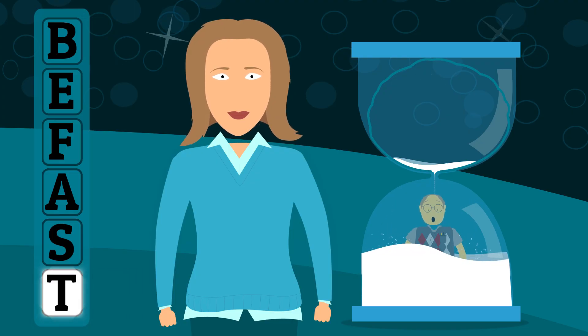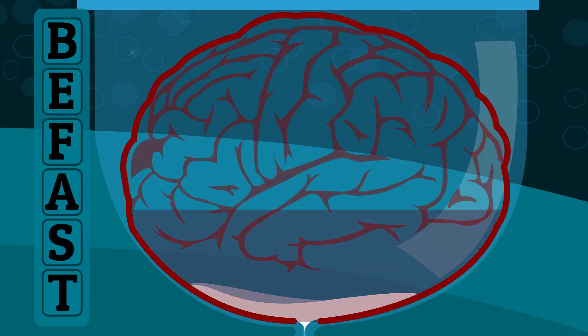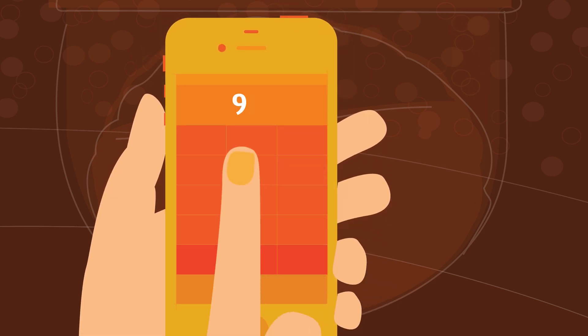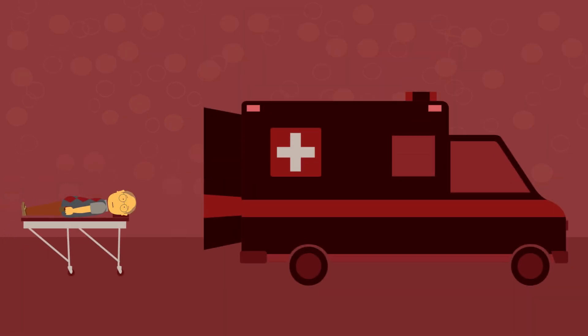Every second brain cells die during a stroke. Time is brain. So, what do you do at the first sign of someone having a stroke? You dial 911. There is no time to waste. So remember, at first signs of stroke, be fast.